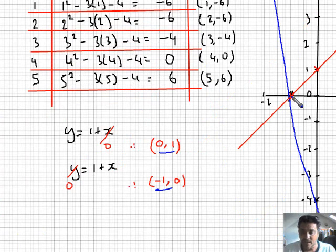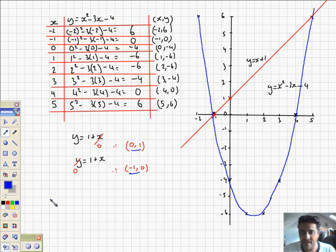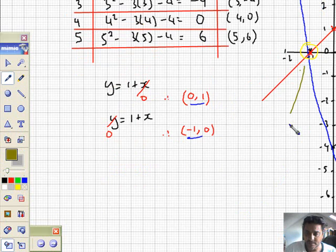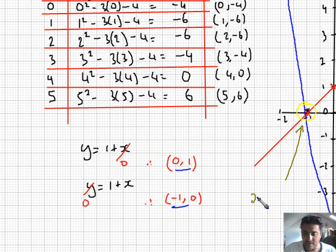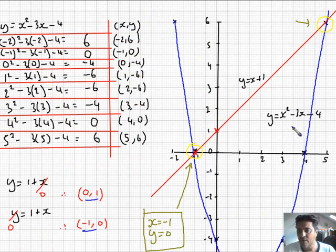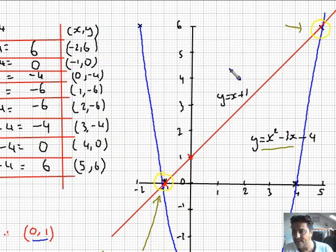The solutions for x and y are going to be there and there. Put a little yellow ring around them to highlight them. So that's one solution and that's the other. What are my solutions? I've got x equals minus 1 and y equals 0. For this one, I've got x equals 5 and y equals 6.